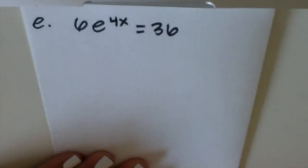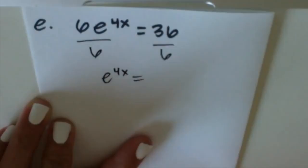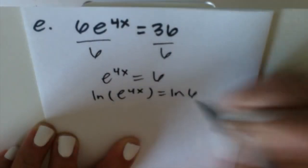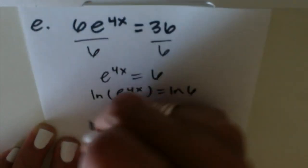This example says 6e^(4x) = 36. So the first thing we're going to do is divide both sides by 6. Now we'll take the natural log of both sides. At this point, you can bring the 4x out to the front.